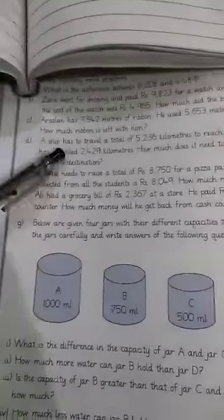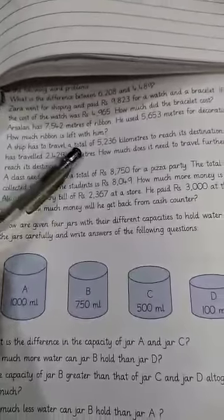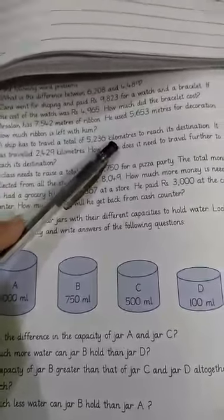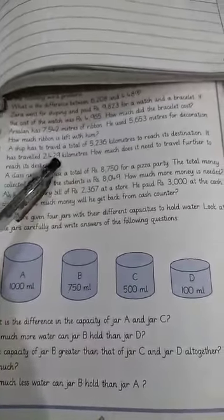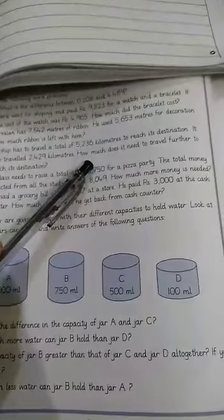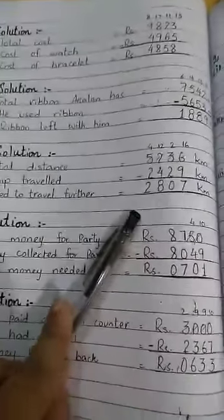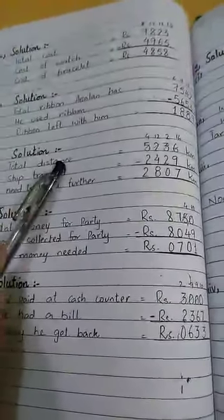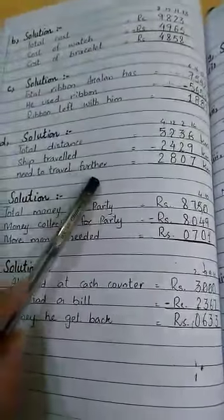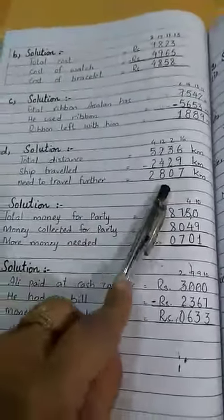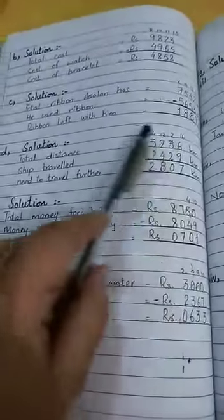Next is number D. A ship has to travel a total of 5236 kilometers. It has traveled 2429 kilometers. How much does it need to travel further to reach its destination? You have to find out the remaining distance. Make sure that you will write the unit as km.